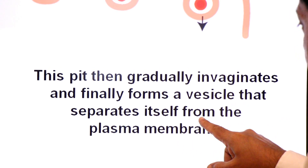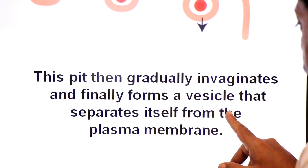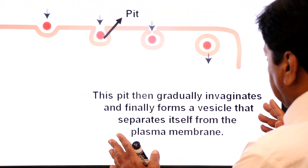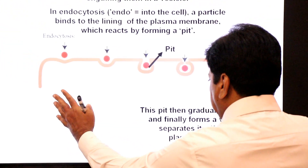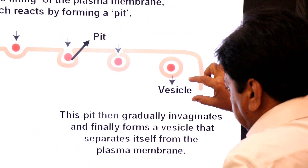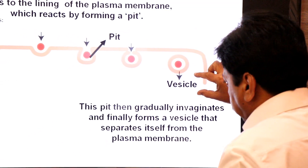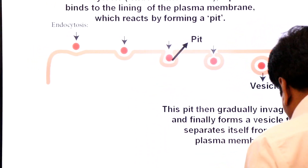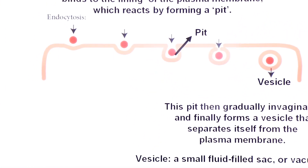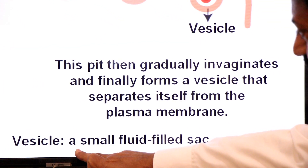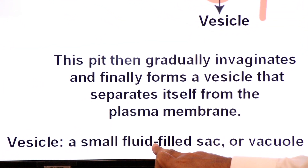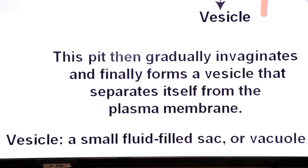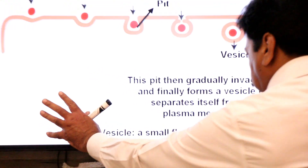This pit then gradually invaginates and finally forms a vesicle — a fluid-filled sac that separates itself from the plasma membrane. A vesicle is a small fluid-filled sac or vacuole. There are two types of endocytosis: phagocytosis and pinocytosis.